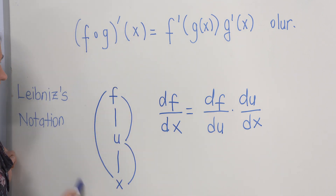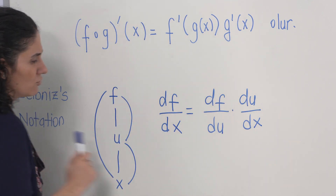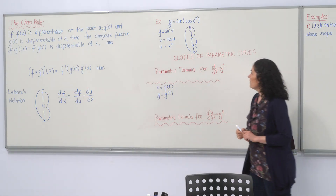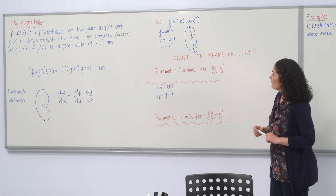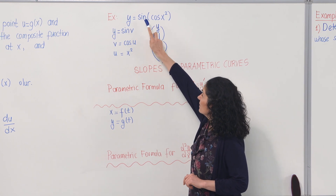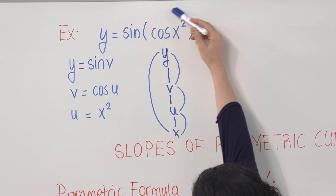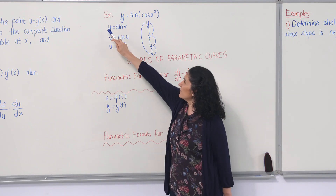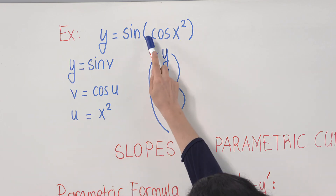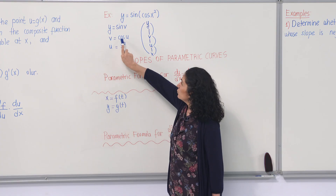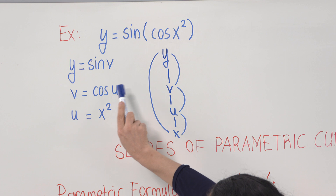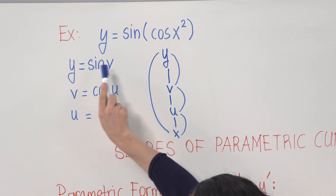We can use diagrams to see the chain rule easily. Here is an example with three functions. The outside function is sine, then cosine, and the inside function is x squared. We say that y is sine(v), v is cosine(u), and u is x squared.